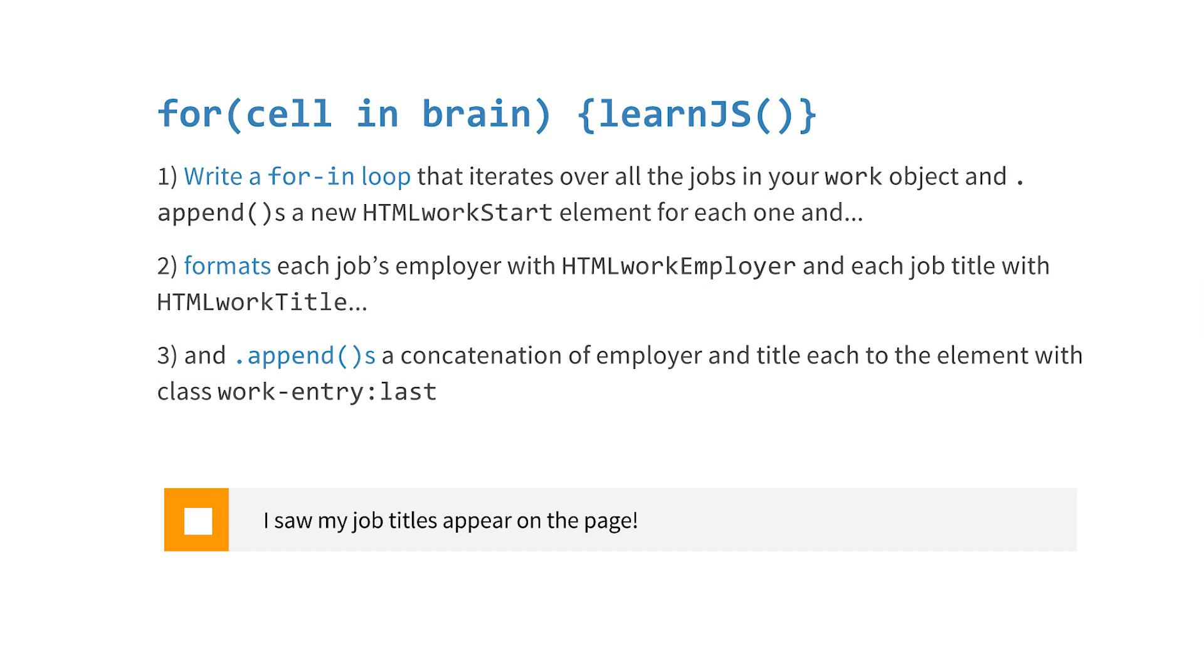You should already have a work object with all of your work experiences. I want you to write a for-in loop that iterates over all the jobs in your work object and appends them in a new HTML work start element. I want you to also format each job's employer with HTML work employer and each job title with HTML work title and append all of that to the page. Click this box when you're done.